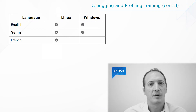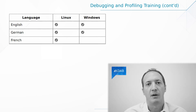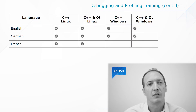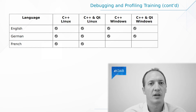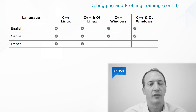This training exists in multiple variants. We can do a training with the tools for Linux, or a separate training with the tools for Windows. There are, of course, some common concepts, but the tools themselves are quite different. We can also give you this training in two variants: either covering only C++ in general, or also including the Qt-specific debugging and profiling tools.